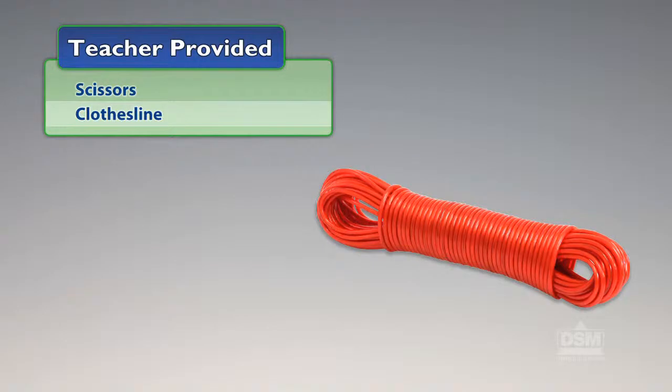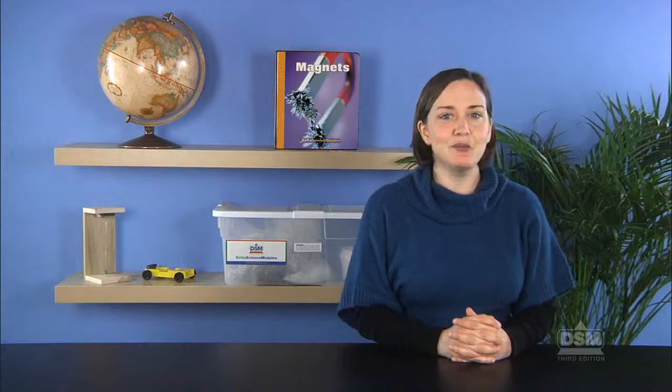You will also need to provide scissors and a clothesline. To prepare for the activity, locate places in the classroom where each team of students can hang a magnet so that it can turn freely. Suggested locations include the tops of door frames or window frames. If no options are available, a clothesline strung high and tight across the classroom works well.